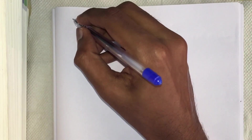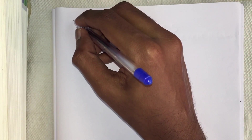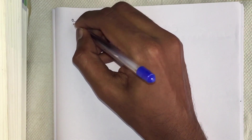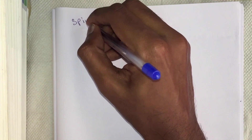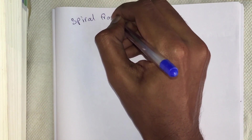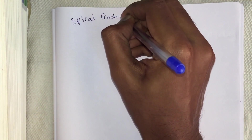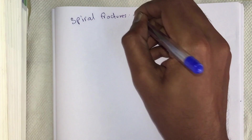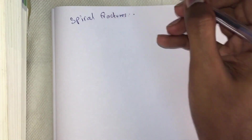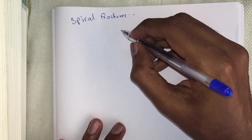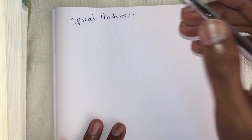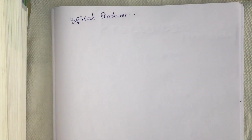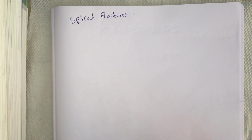The third type is spiral fractures. This is when the fracture line runs spirally in more than one plane.